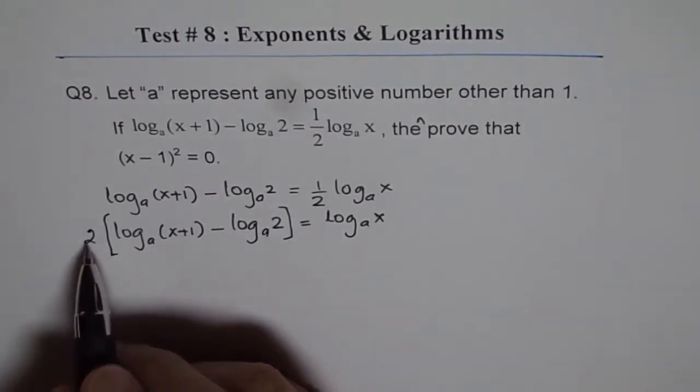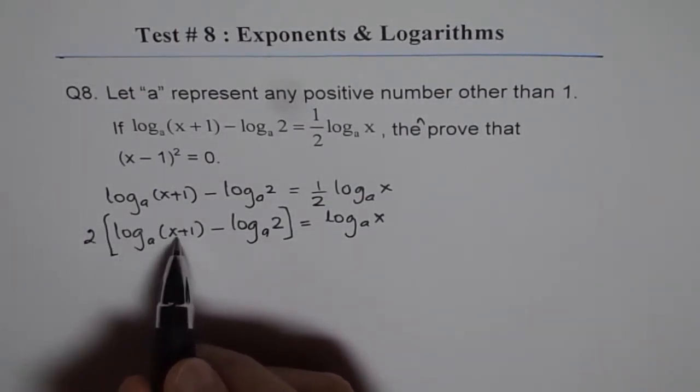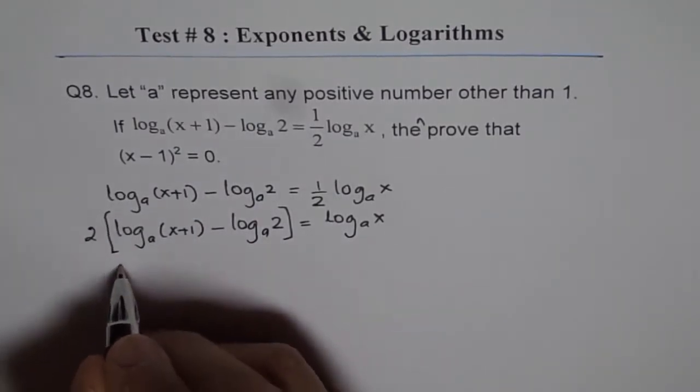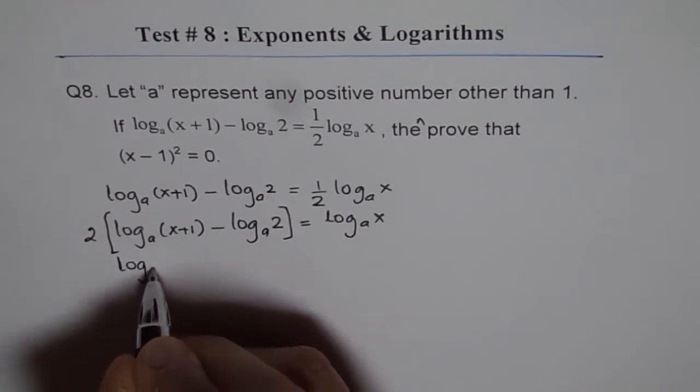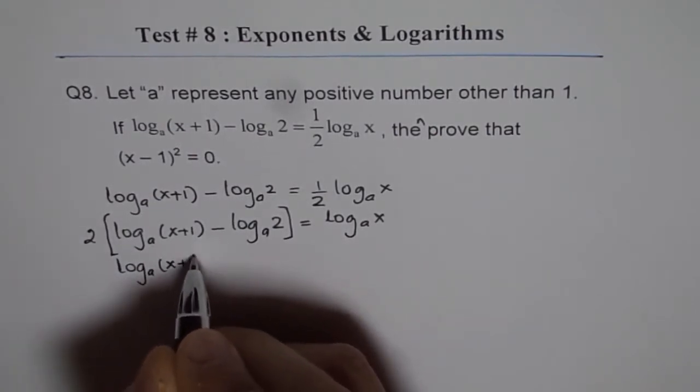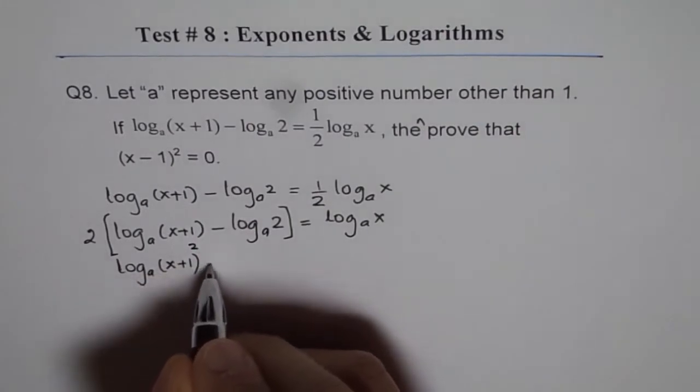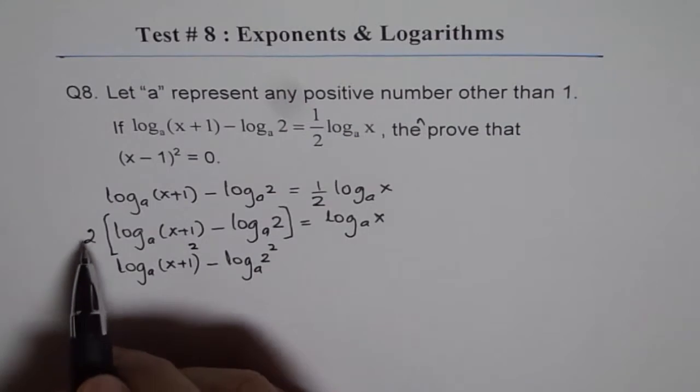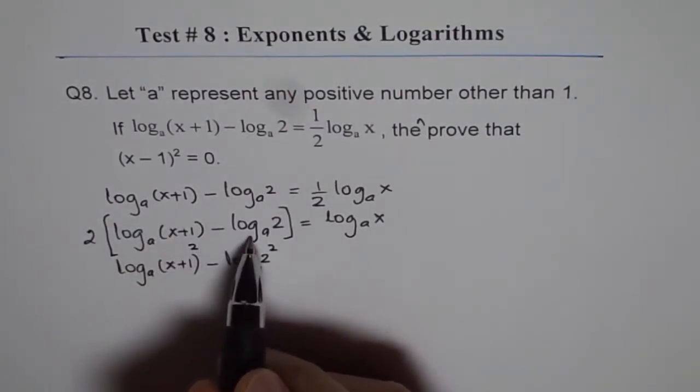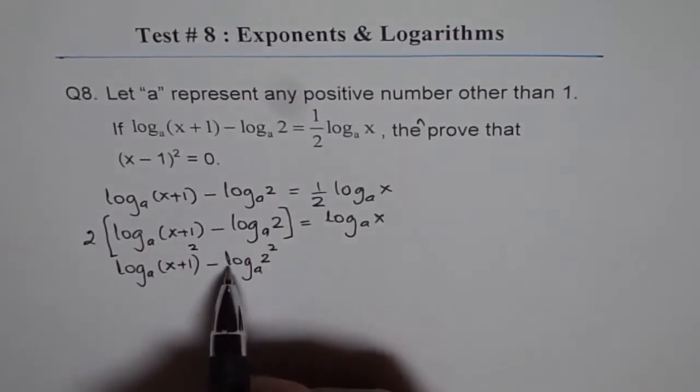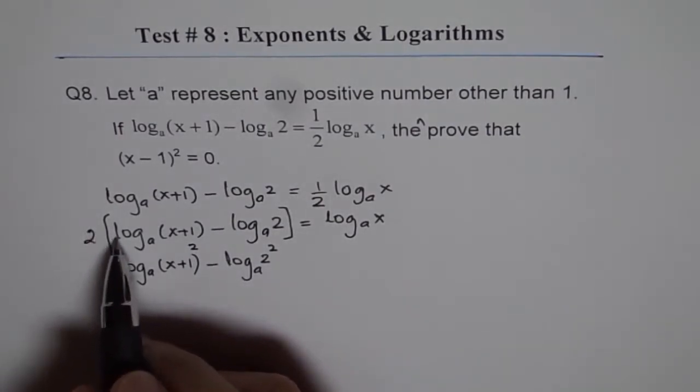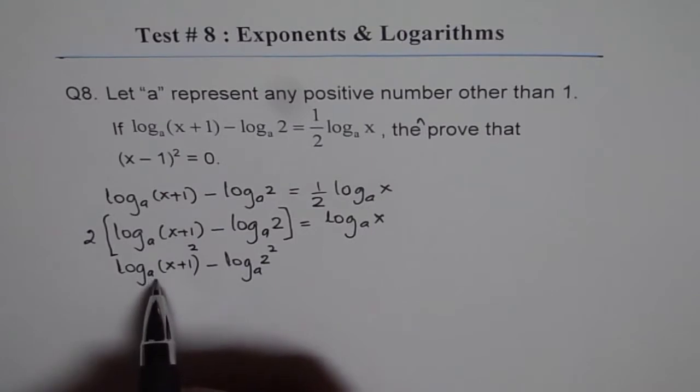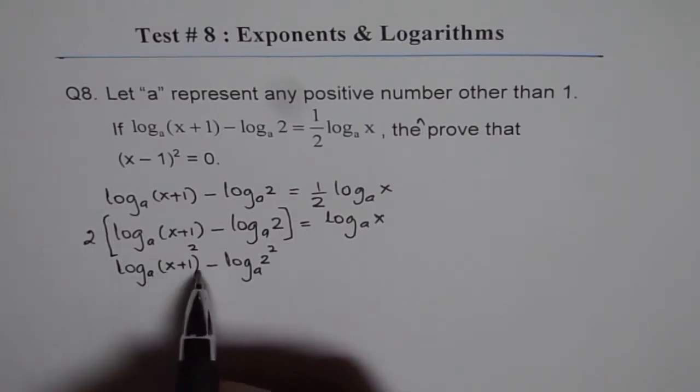So now we use power rules. When you multiply this by 2, this could be written as x plus 1 whole squared. So we'll open this bracket now. We'll write this as log A of x plus 1 square minus log A of 2 square. So that is 2 times log A of 2 will be written as log A of 2 square. 2 times log A of x plus 1 is being written as log A of x plus 1 square. We've used the power rule.